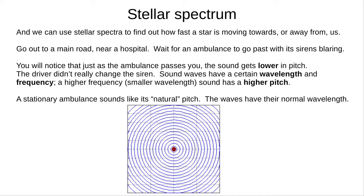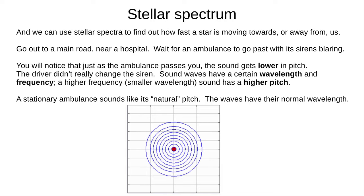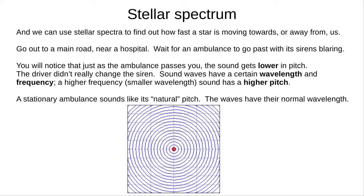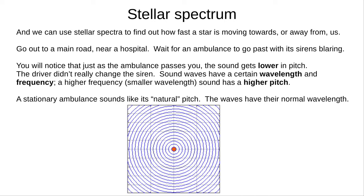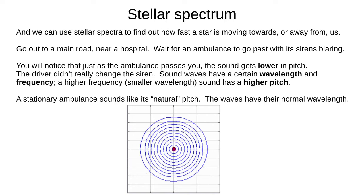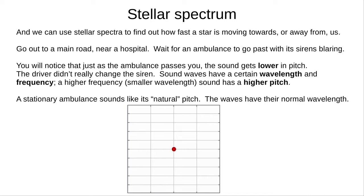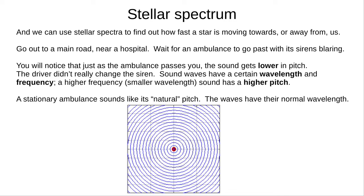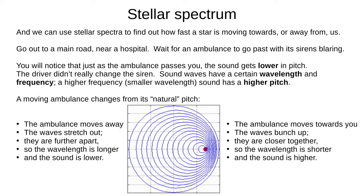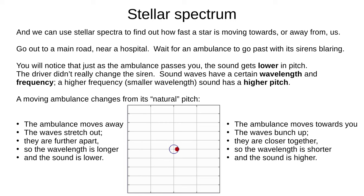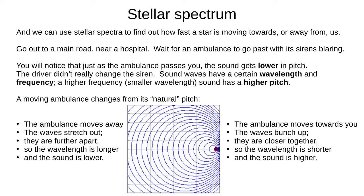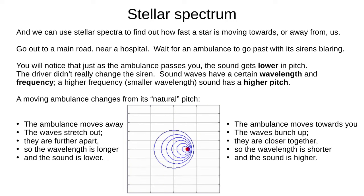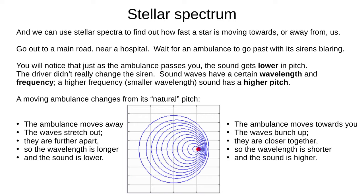So we've learned how starlight can tell us the distance to a star and its temperature and composition. Lastly today, we'll look at how starlight can tell us the speed of a star. Go to a main road near a hospital and wait for an ambulance to pass with its sirens blazing. Just as the ambulance passes you, the sound will get lower in pitch. Note the driver didn't press a button to change the sound just to mess with you. Sound waves have a certain wavelength and frequency. A higher frequency or smaller wavelength produces a higher pitch. Here you can see an animation of sound waves from a stationary ambulance. Anybody standing nearby will hear the ambulance's natural pitch. Here the ambulance is moving to the right. If you're standing on the left behind the ambulance, as it moves away the waves stretch out. The wavelength gets longer and the pitch of the siren gets lower. If you're standing in front of the ambulance, the waves bunch up as it moves towards you, the wavelength gets smaller and the siren sounds higher. The driver, moving along with the ambulance, will always hear the same natural pitch.